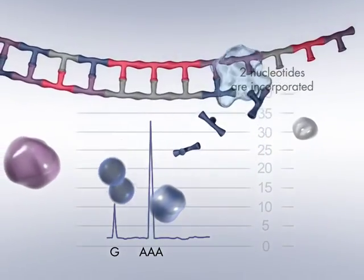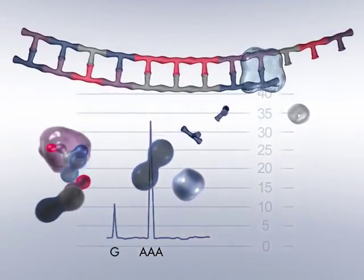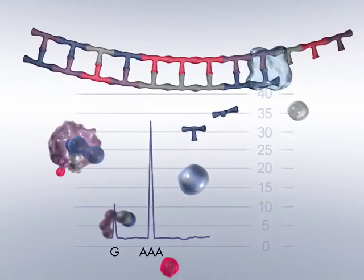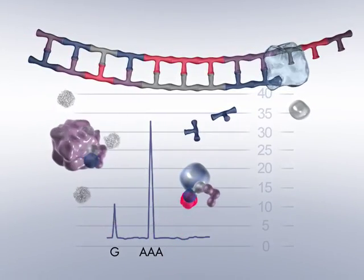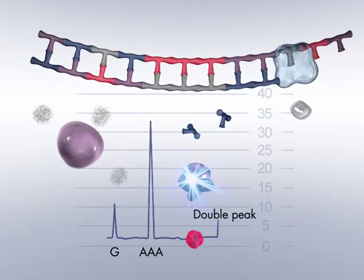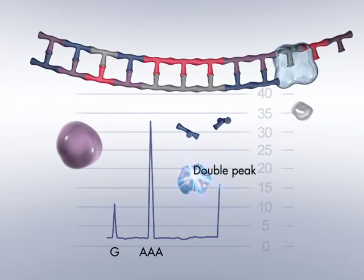Another dispensation of nucleotides takes place. Pyrophosphate is generated, then converted into ATP, and a corresponding light signal results from luciferin oxidation, in this case a double peak.